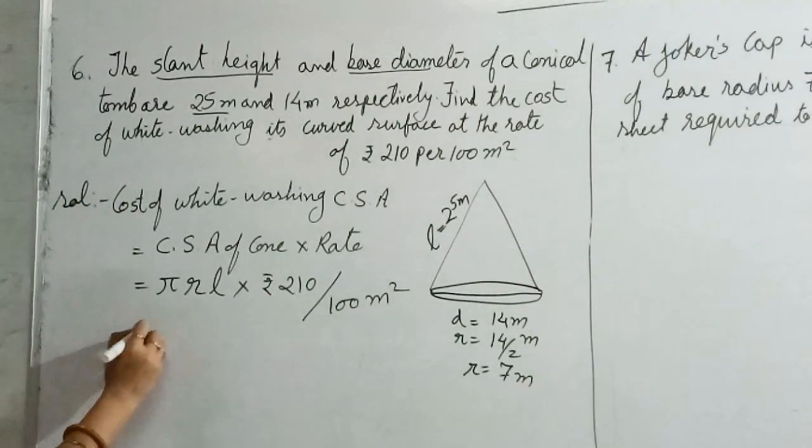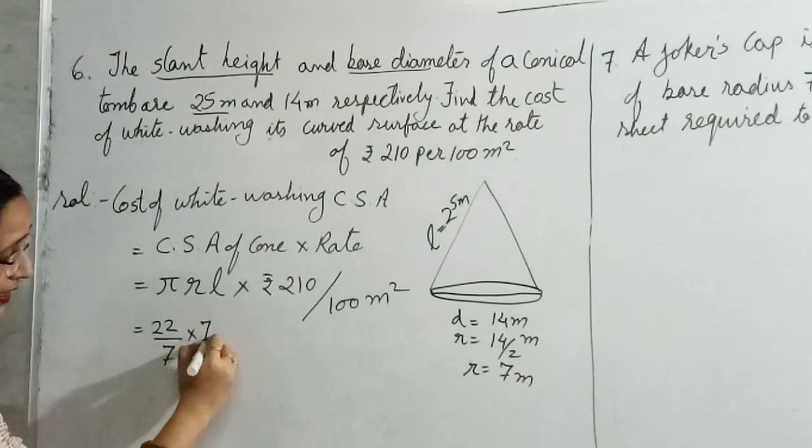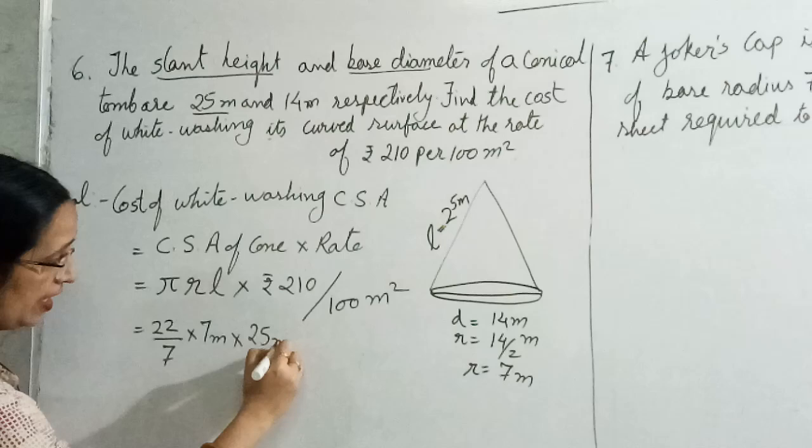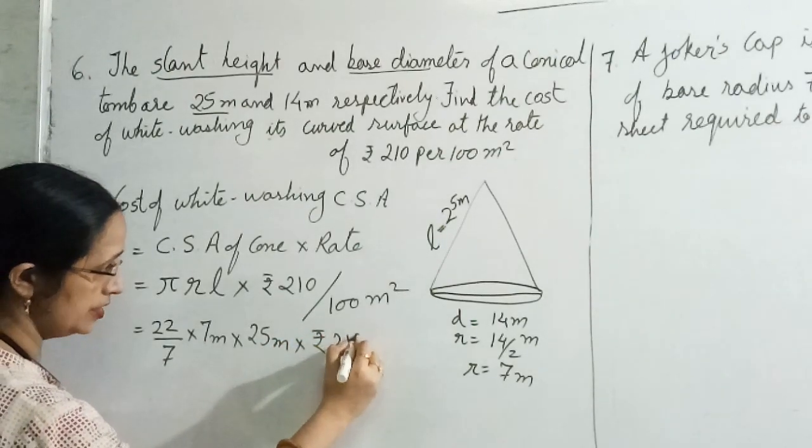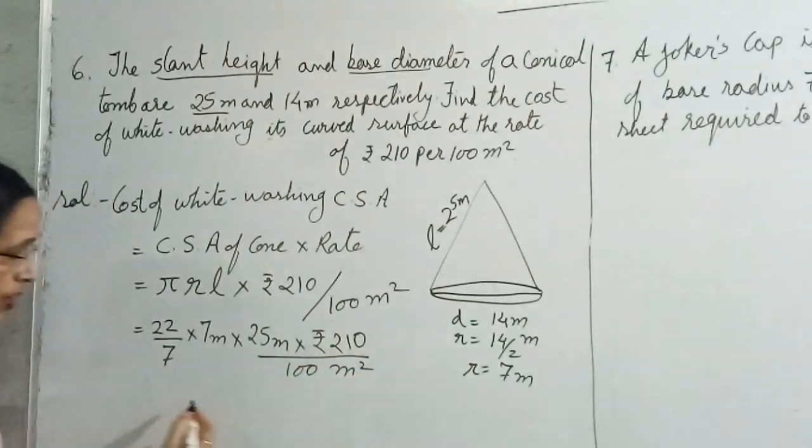Now here we will put the value for pi. In this question, they have not mentioned any special value for pi, so it will be 22 by 7, into r, they are telling 7 meter, into l, they are telling 25 meter, into rupees 2, 1, 0, upon 100 meter square.